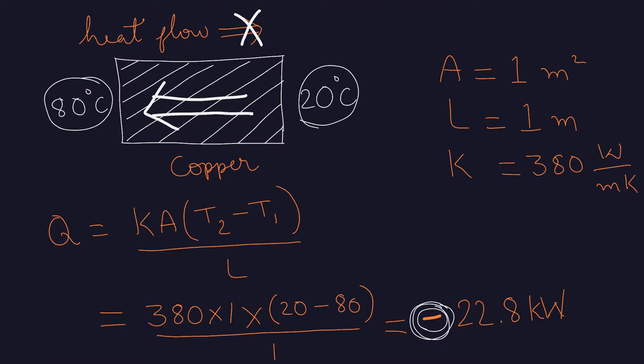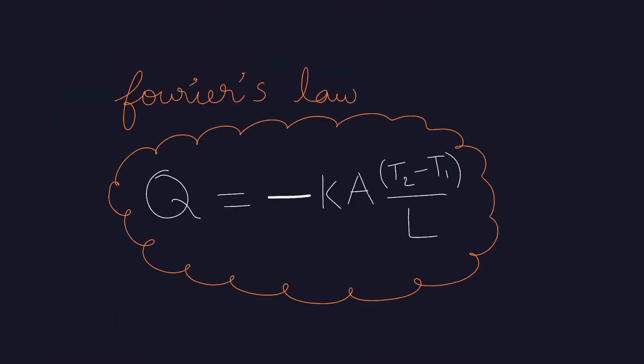So, to work around this problem, we have to place a negative sign in the law. So, ultimately Fourier's law of heat conduction is Q is equal to minus K A delta T by delta X.